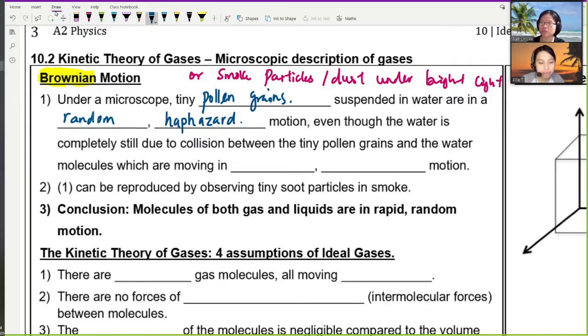So due to collision between, so even though water is completely still, due to collision between the tiny pollen grains and the water molecule. So because the pollen grains or the smoke particle is moving haphazardly, you can infer that the medium that they're traveling in is moving haphazardly. So they're also moving in zigzag and jerky motion. So this Brownian motion can observe with soot, smoke, dust, anything. Not anything, things that can move. So the conclusion here is molecules of both gas and liquid are in rapid random motion, which is the Brownian motion.